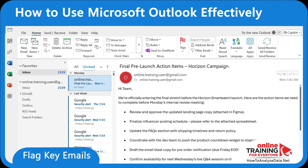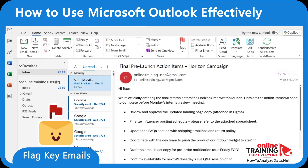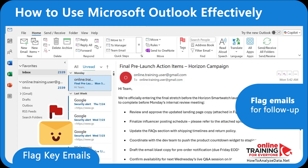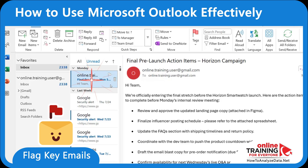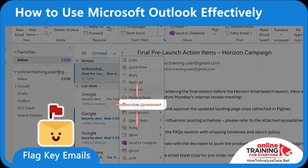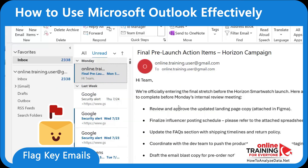Another valuable thing you can do is stay on top of important emails with flags. Outlook allows you to flag emails to visually mark messages that need follow-up. To flag a message, right-click on the email and select Follow-Up, and you will now see the red flag icon on the email that requires attention.